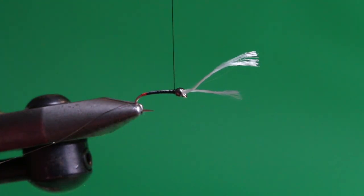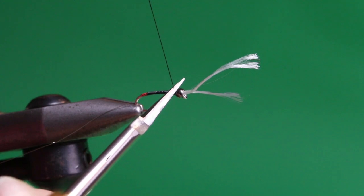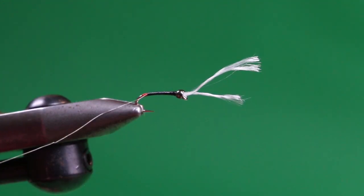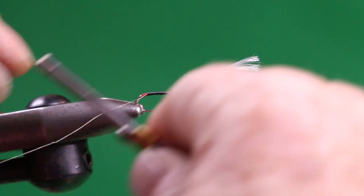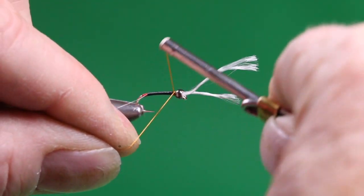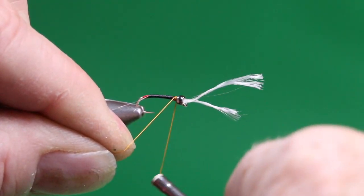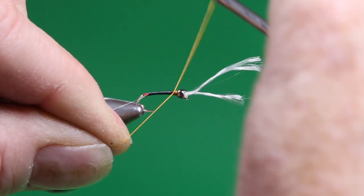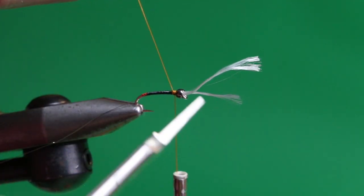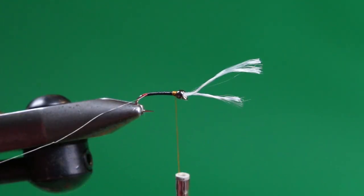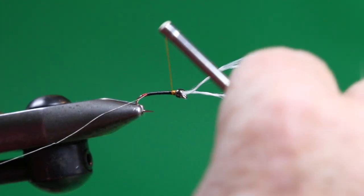And introduce the final color we're going to add to this fly, which is burnt orange. UTC 70 burnt orange, or a rust brown coloration. This is going to help suggest the wing pad area of the natural pupa. So we've just got that tied in.